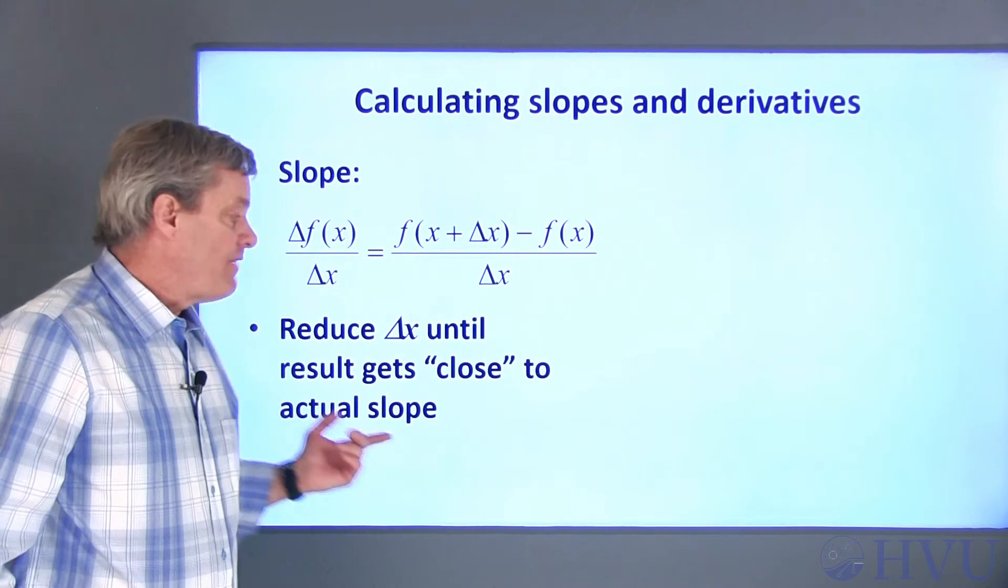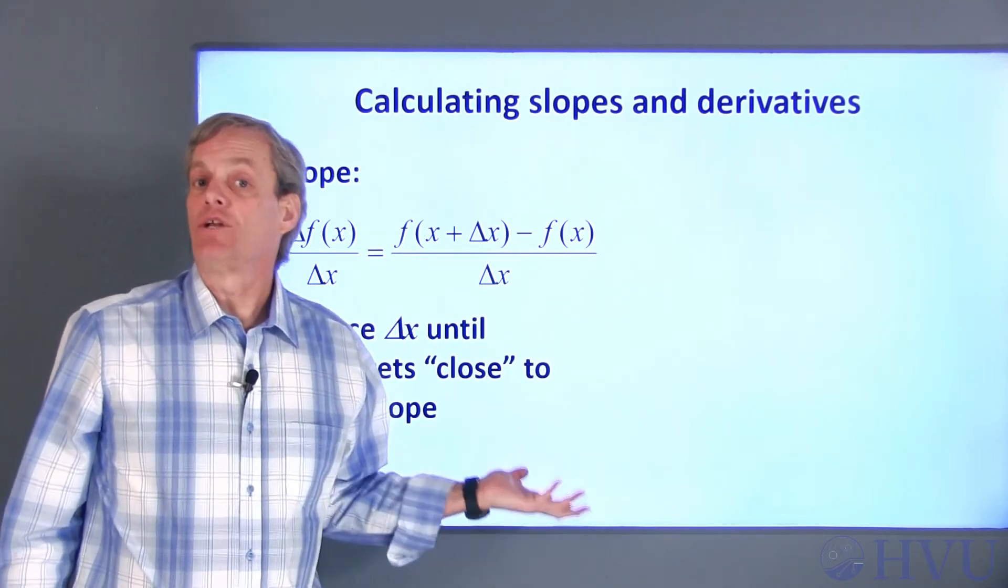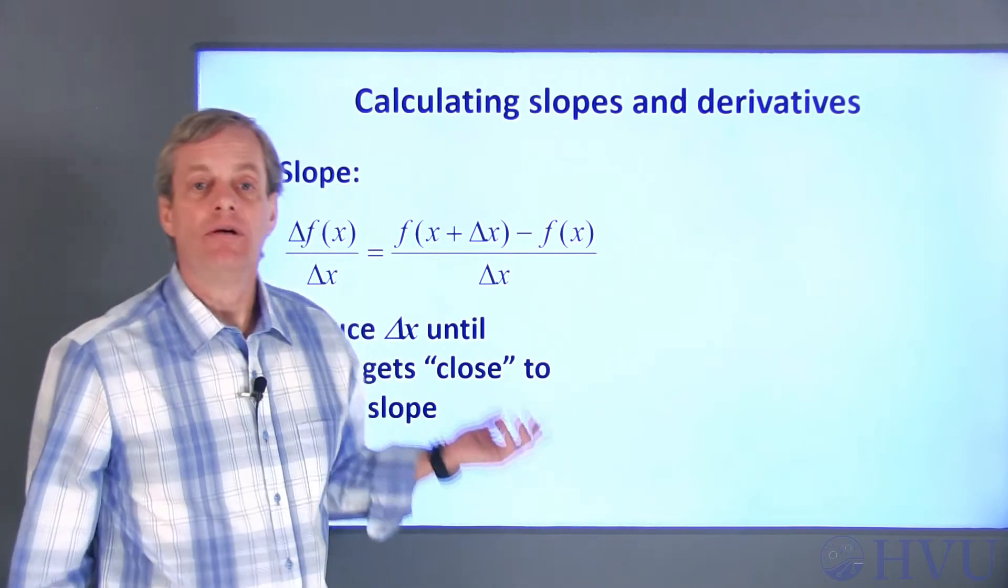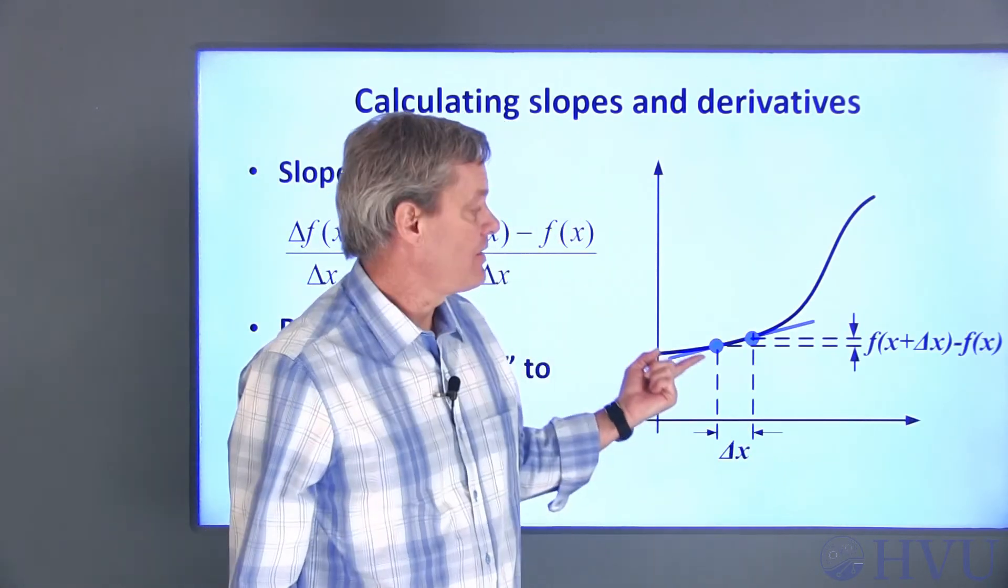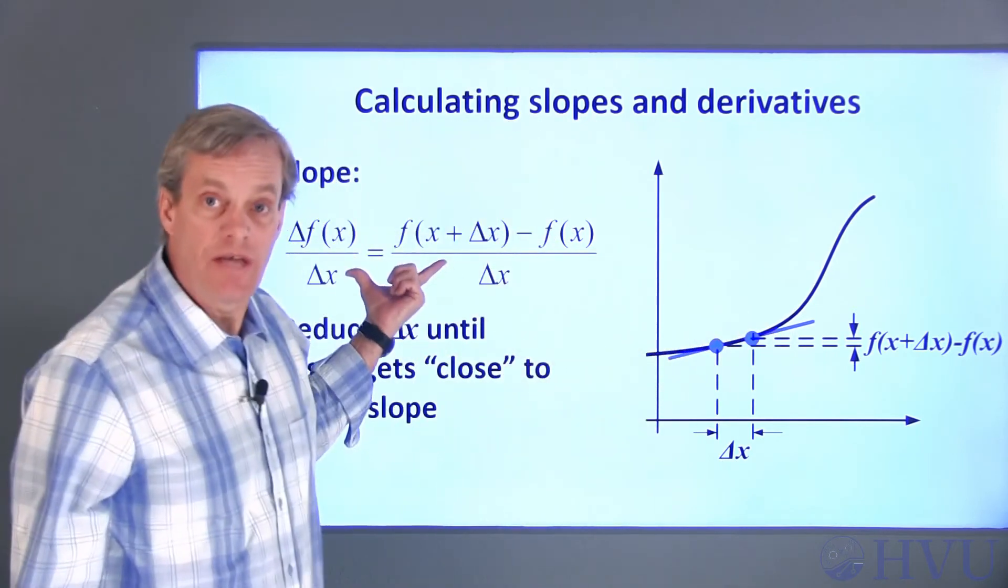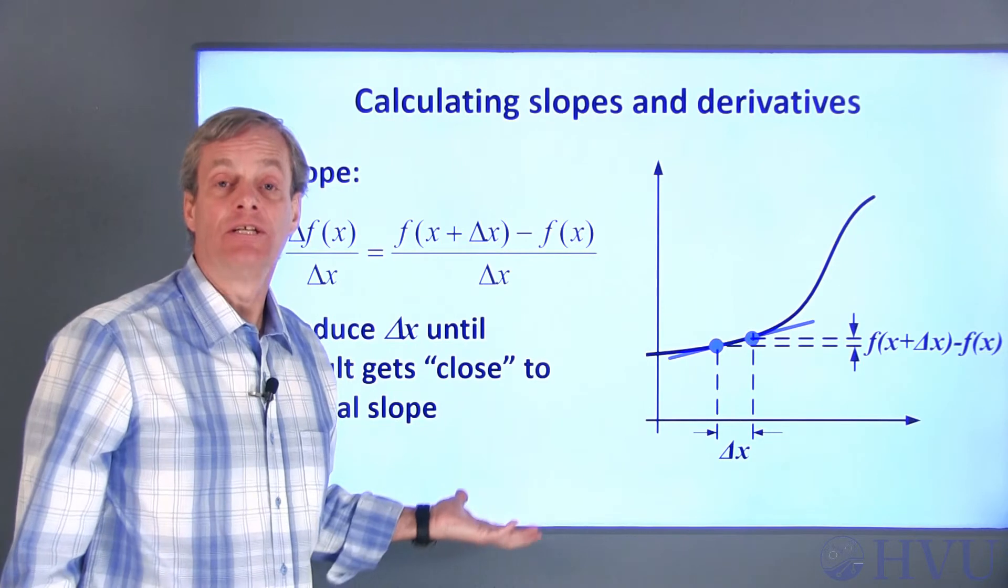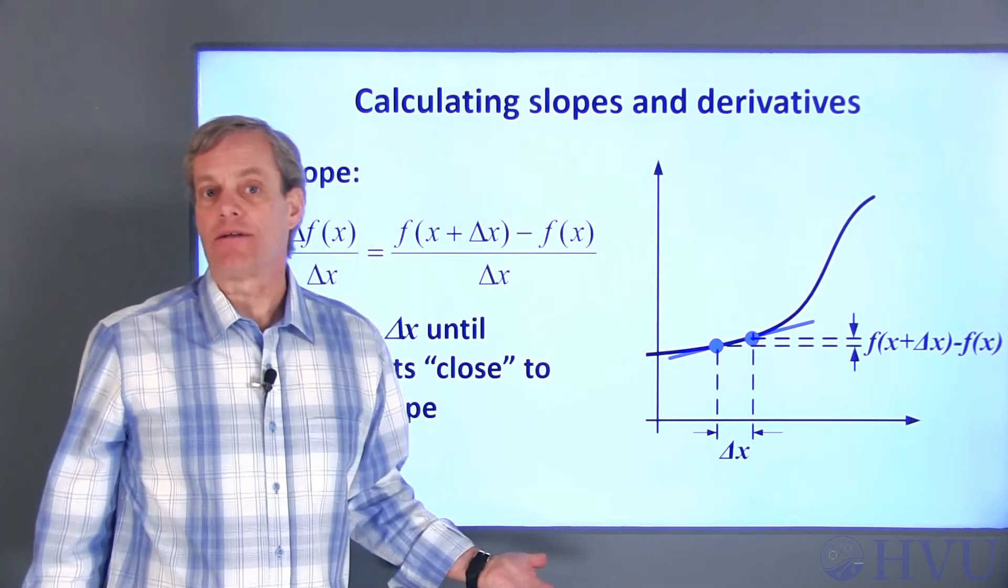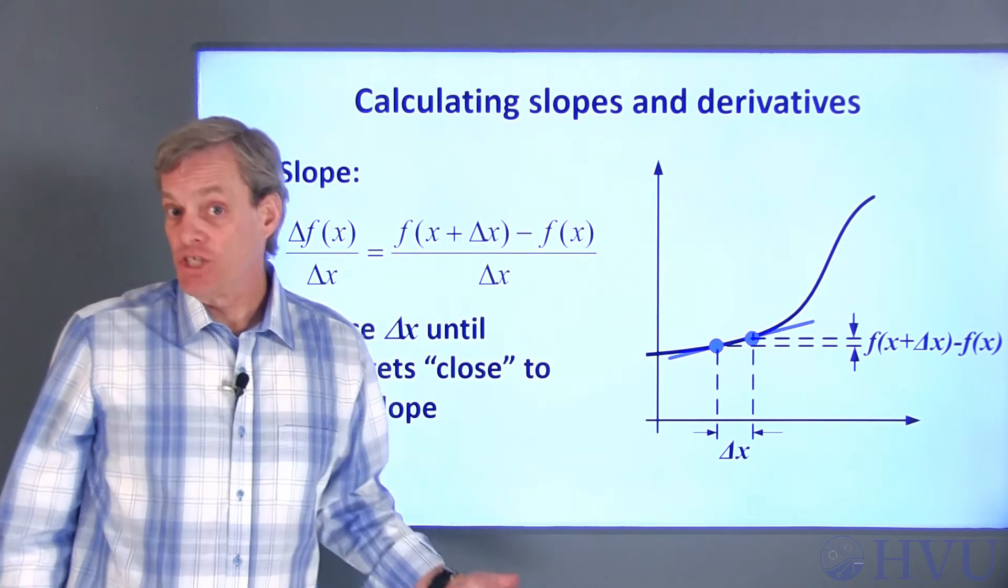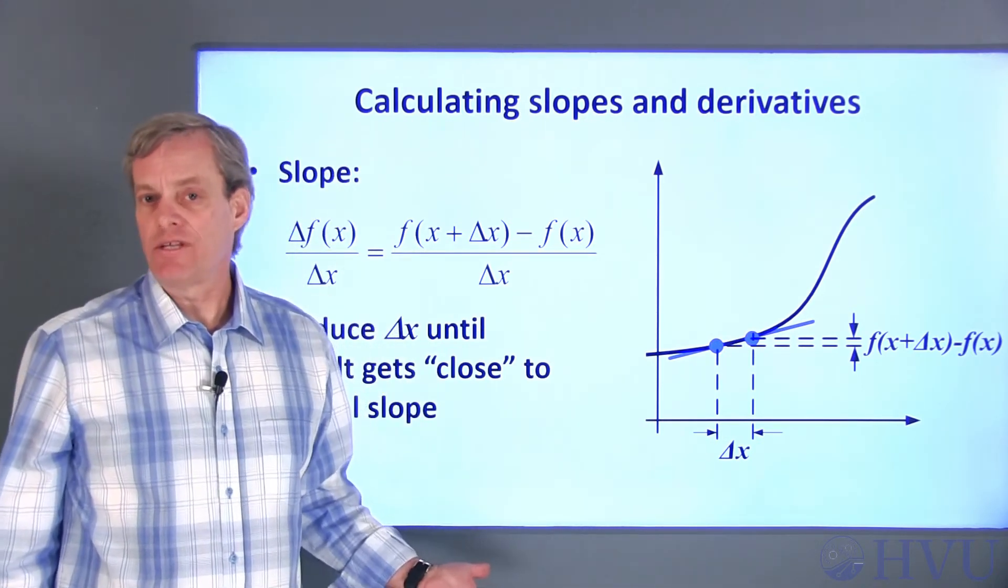We just need to find the distance delta x that will give us an estimate that's sufficiently close to the actual slope. So let's pick a smaller value for delta x and calculate the slope again using that value. If the smaller delta x gives a significantly different slope than the larger one, keep reducing delta x. Once the slope doesn't change when you reduce delta x, you can figure your estimate is pretty close to the actual value.